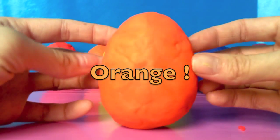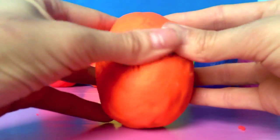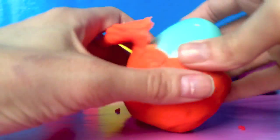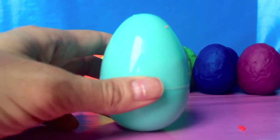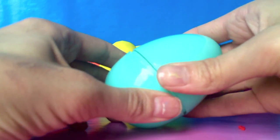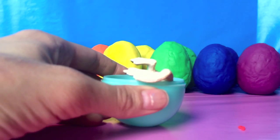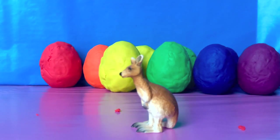Now we have an orange egg. What's inside? It's a blue egg. I wonder what's inside that egg. It's a kangaroo.